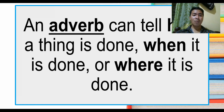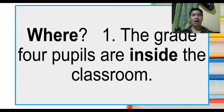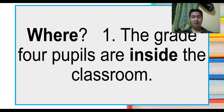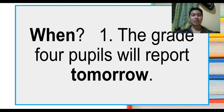An adverb can tell how a thing is done, when it is done, or where it is done. For example — how: the grade 4 pupils dance gracefully. For where: the grade 4 pupils are inside the classroom. The word 'inside' is in bold and answers the question where. For when: the grade 4 pupils will report tomorrow. The word 'tomorrow' is in bold and answers the question when.